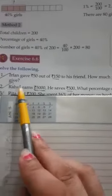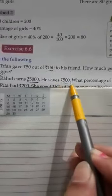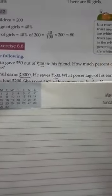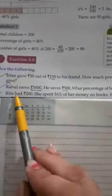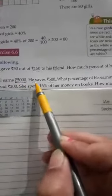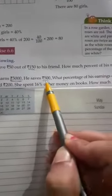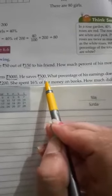The second problem is: Rahul earns rupees 5000. He saves rupees 500. What percent of his earning does he save? From the total money of 5000, he saves rupees 500. We need to find the saving in percentage.